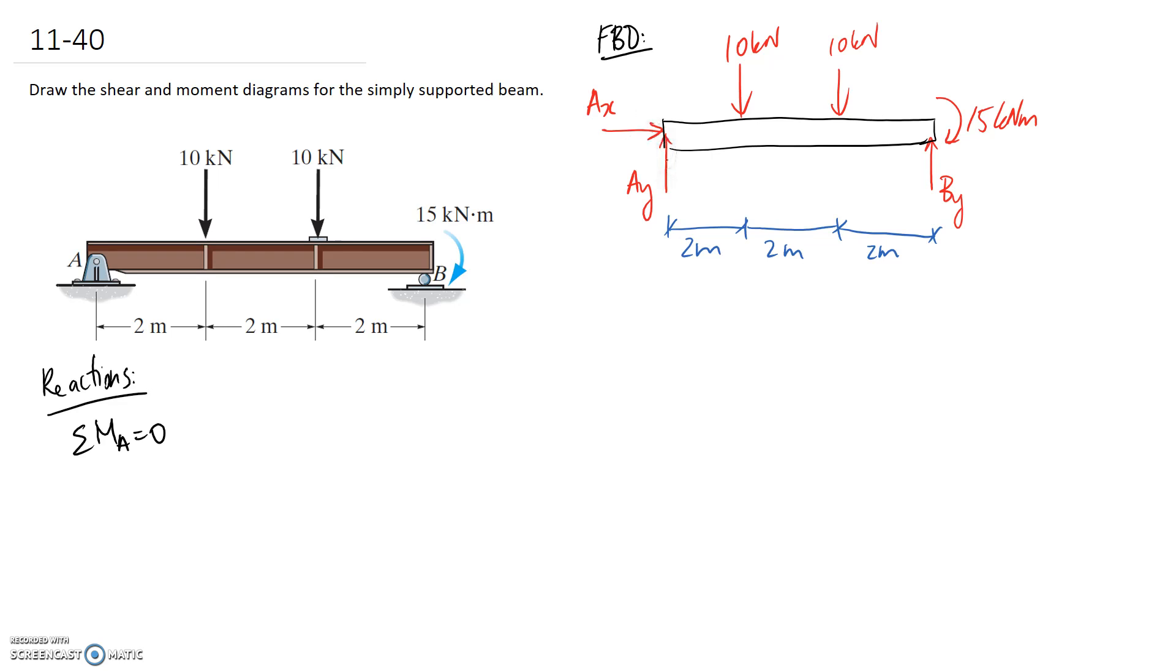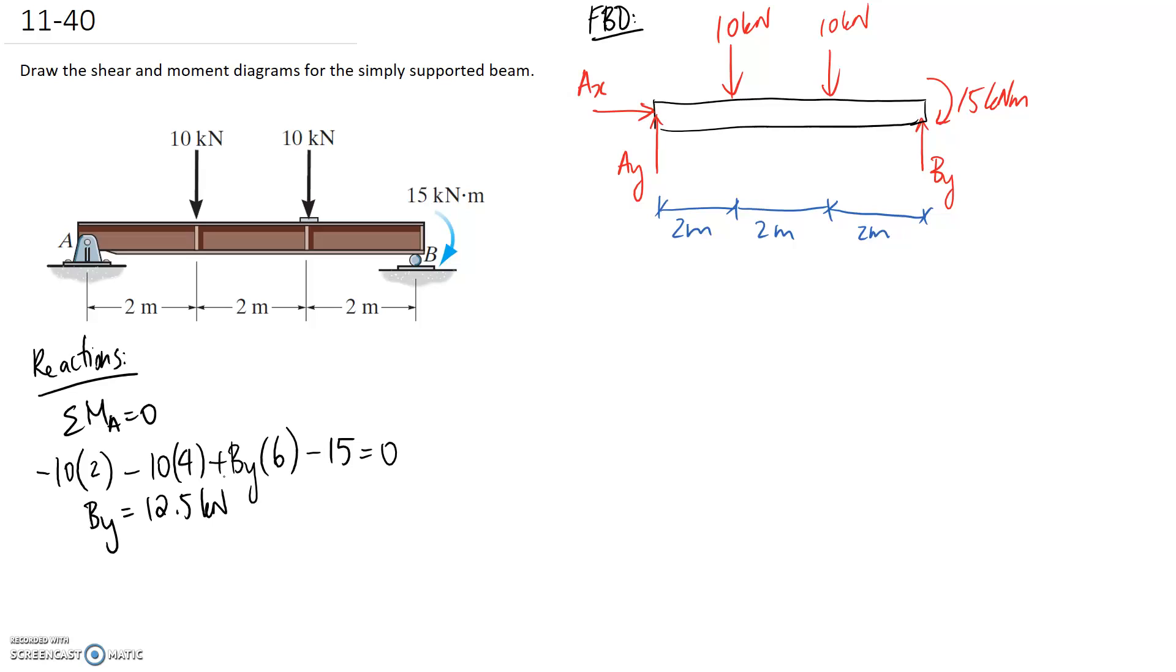AX and AY act through this point so they're not going to be in the equation. We've then got the 10kN force at a distance of 2m and it's going to try and create a clockwise rotation so it's negative. We've then got the 10kN at a distance of 4m again causing a clockwise rotation. We've got BY which is at a distance of 6 and it's going to try and rotate this thing anti-clockwise. And finally we have the couple on the end which is clockwise so it goes in as negative 15. Rearranging this equation to solve for BY we end up with 12.5kN.